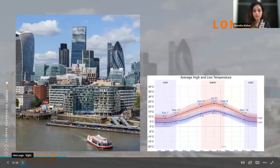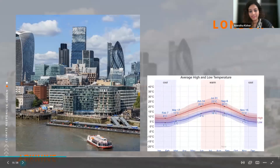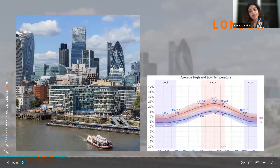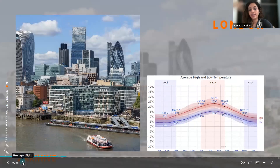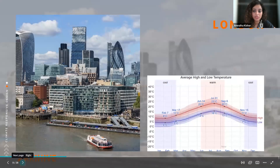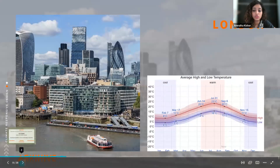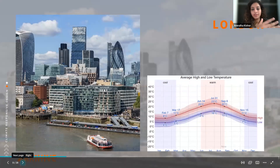Let's do a small case study. We have London on the left with really tall glass towers — very modern, very busy city life. Looking at the climatic data for London, the average temperature ranges from around four degrees Celsius minimum to 23 degrees Celsius maximum. It is comparatively cool.